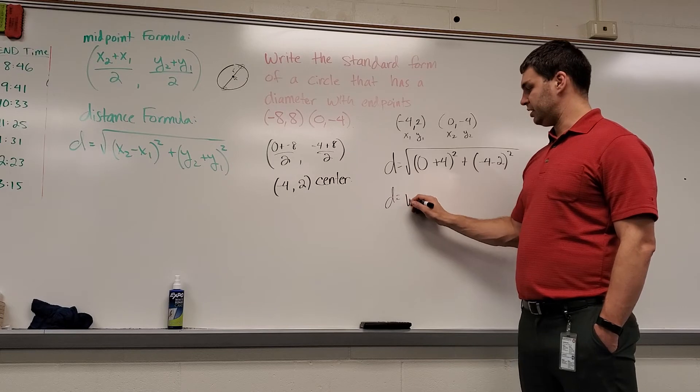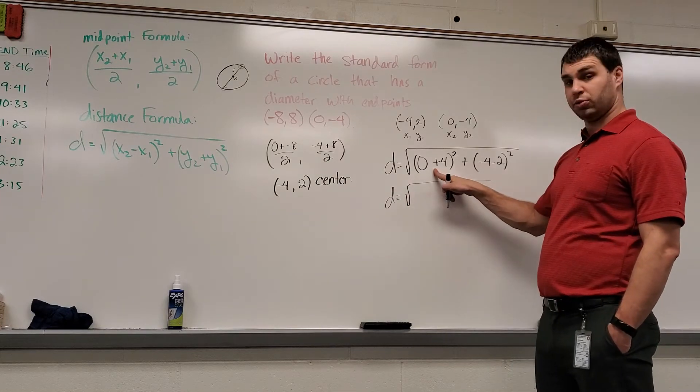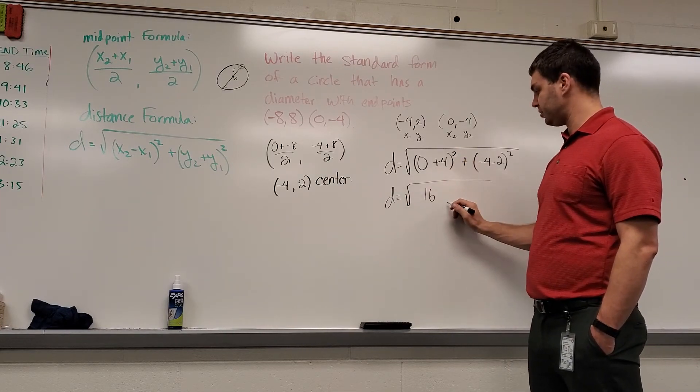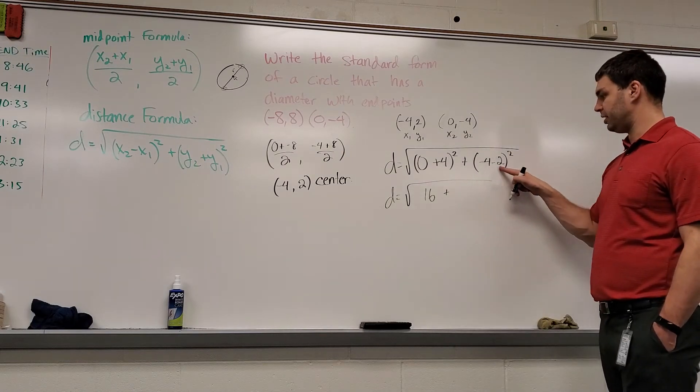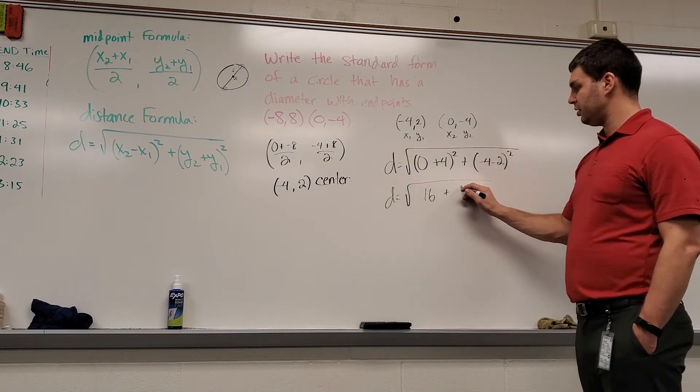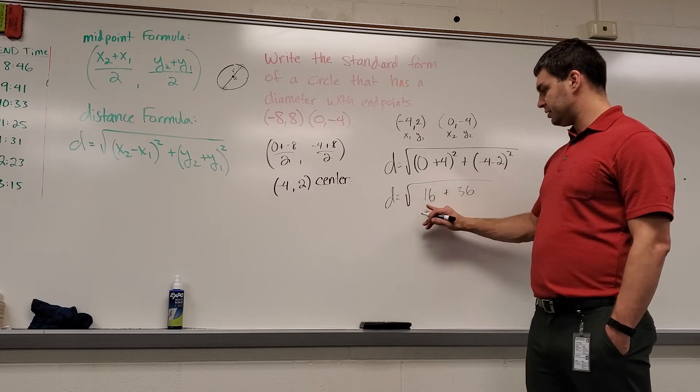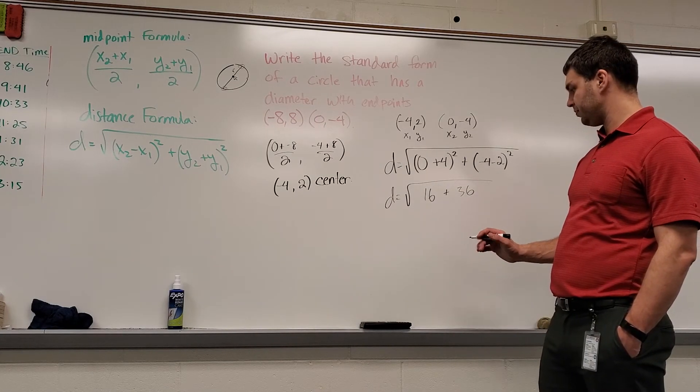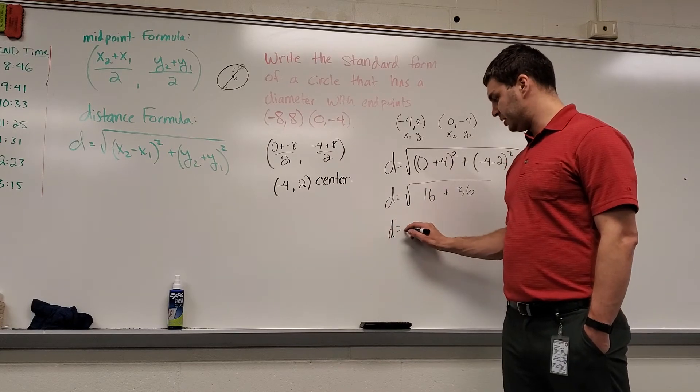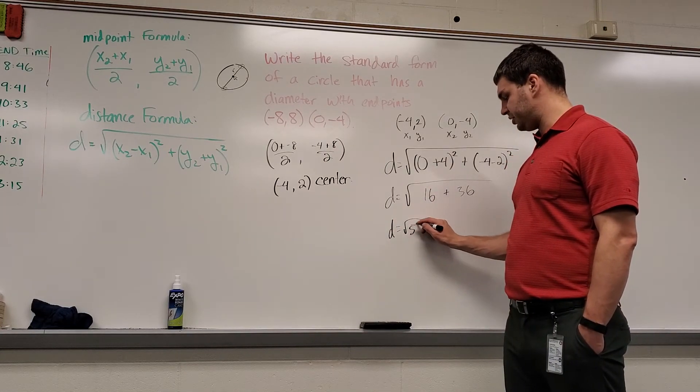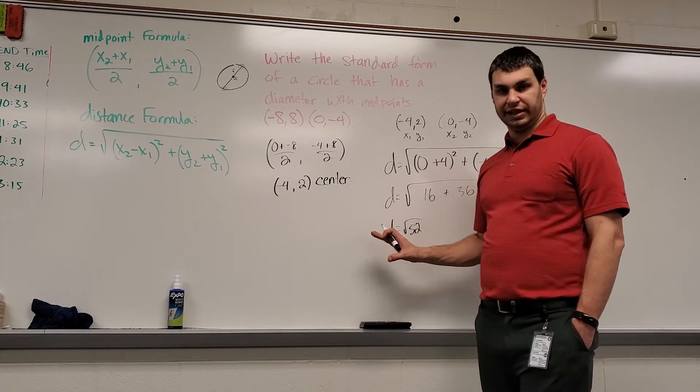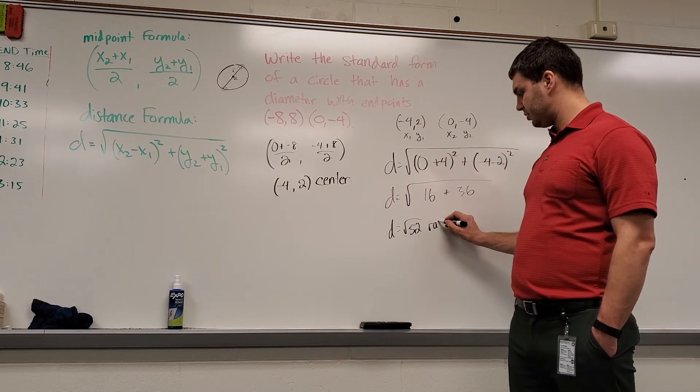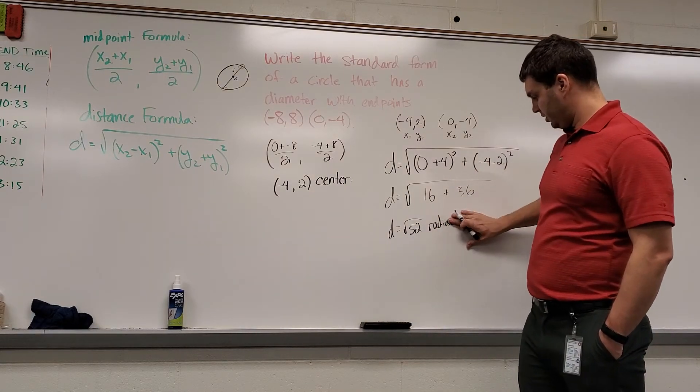This is now d equals the square root of 4 squared, which is 16, plus negative 4 minus 2 is negative 6 squared, which is 36. 16 plus 36 is 52. So this is going to be d equals the square root of 52. And what we can do is just leave it like this, because remember, this is the radius.